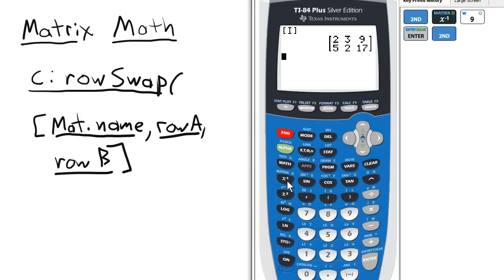So we want to go to the matrix menu and then from there select math and then option C for row swap.